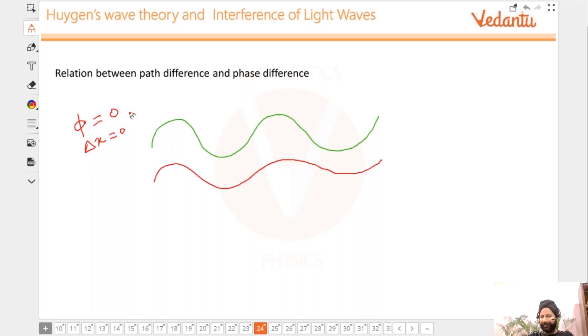Does everybody understand that? Now let me draw another wave here. What is the phase difference? Can anybody tell me phase difference and path difference please? These are the things from your 11th grade study. How much is phase difference and path difference between black and blue? Please everybody tell me.